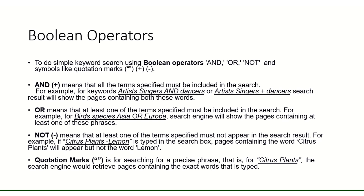For example, typing "citrus plants" — the search engine would retrieve pages containing the exact words that are typed in the search box.